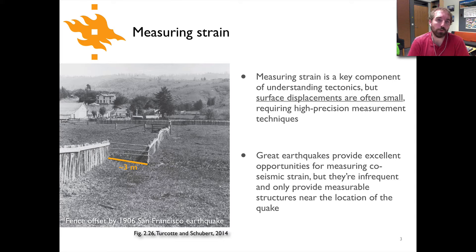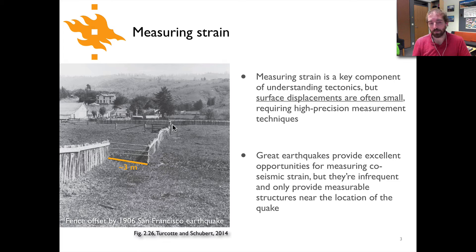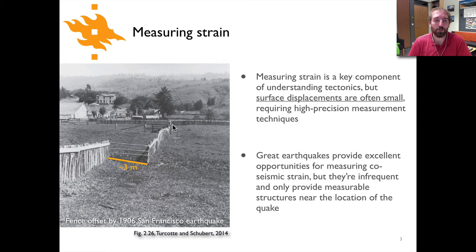We've seen a version of this figure before, and it comes up in the context of measuring strain because it's a nice example of about a three meter offset on a fault near where the San Francisco earthquake took place in 1906, and it clearly gives an indication of strain at the surface of the earth. When we have these big earthquakes they're convenient ways of looking at deformation of the earth because the deformation rates and the amount of offset of faults can be quite significant, on the order of meters.